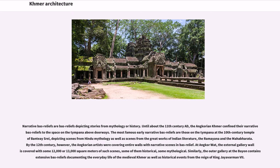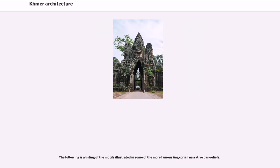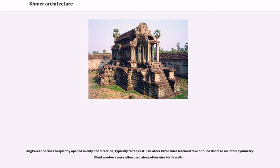Similarly, the outer gallery at the Bayon contains extensive bas-reliefs documenting the everyday life of the medieval Khmer as well as historical events from the reign of King Jayavarman VII. Angkorian shrines frequently opened in only one direction, typically to the east. The other three sides featured fake or blind doors to maintain symmetry, and blind windows were often used along otherwise blank walls.